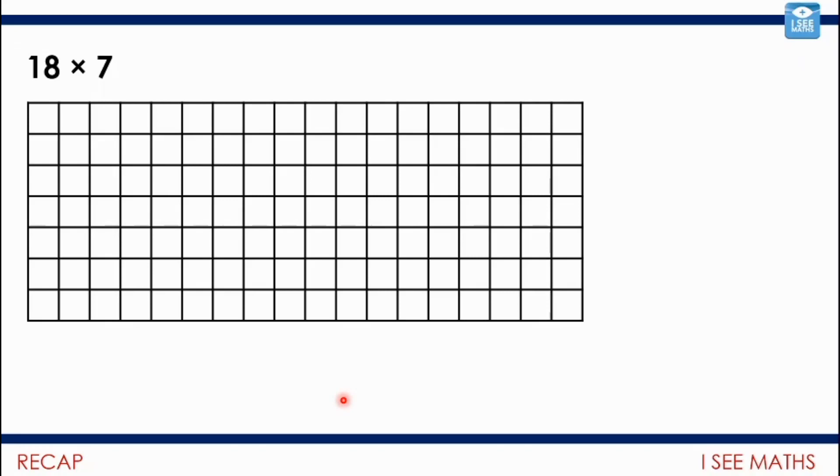So let's get started with a recap from where we got to yesterday. On the topic of building flexibility in calculation, we're going to do a bit of a recap of what we've looked at already. So let's have a look here. We've got a grid that represents 18 multiplied by 7. What I want you to do is pause the video and have a think about the different ways you can break down either of those numbers to do that calculation.